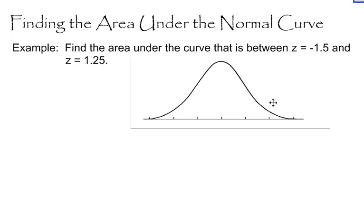I've found the area to the right of a z-score, but now we've got a different situation. We are finding the area under the curve that is between two z-scores. And the two z-scores that I have are a z-score of negative 1.5 and a z-score of positive 1.25.